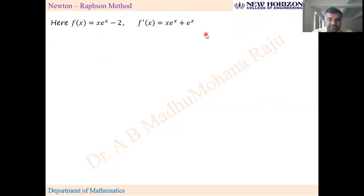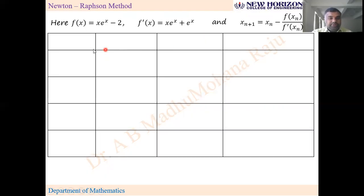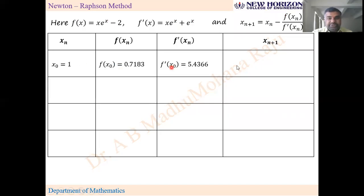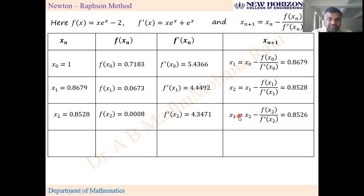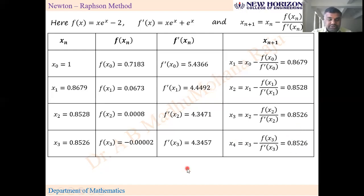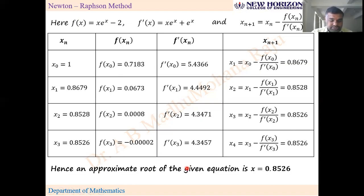List f(x) and f'(x), and the formula for xₙ₊₁. The table has columns xₙ, f(xₙ), f'(xₙ), and xₙ₊₁. Starting with x₀ = 1, compute f(x₀) and f'(x₀) to get x₁. Then use x₁ to find x₂, then x₃, then x₄. When two consecutive values are equal, stop the iteration. The approximate root is x = 0.8526.